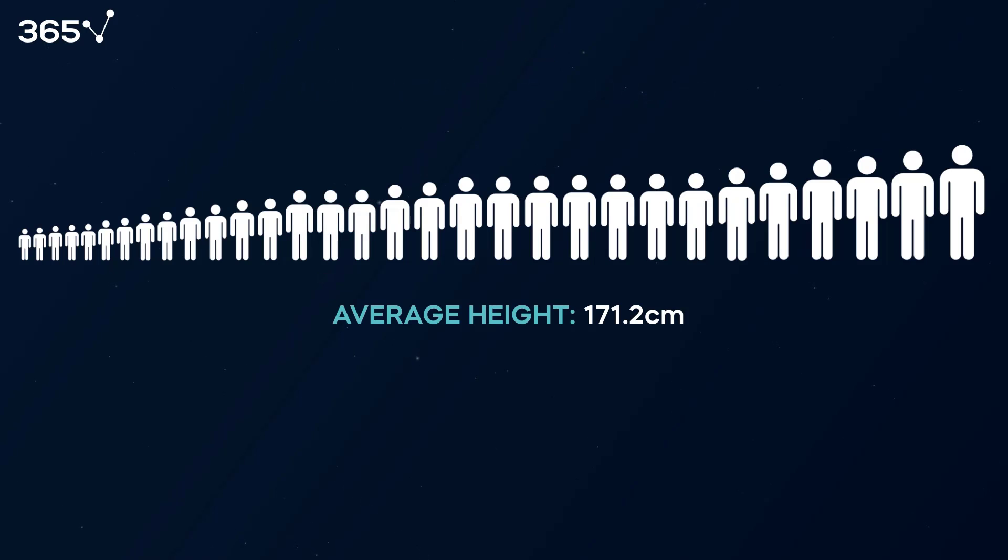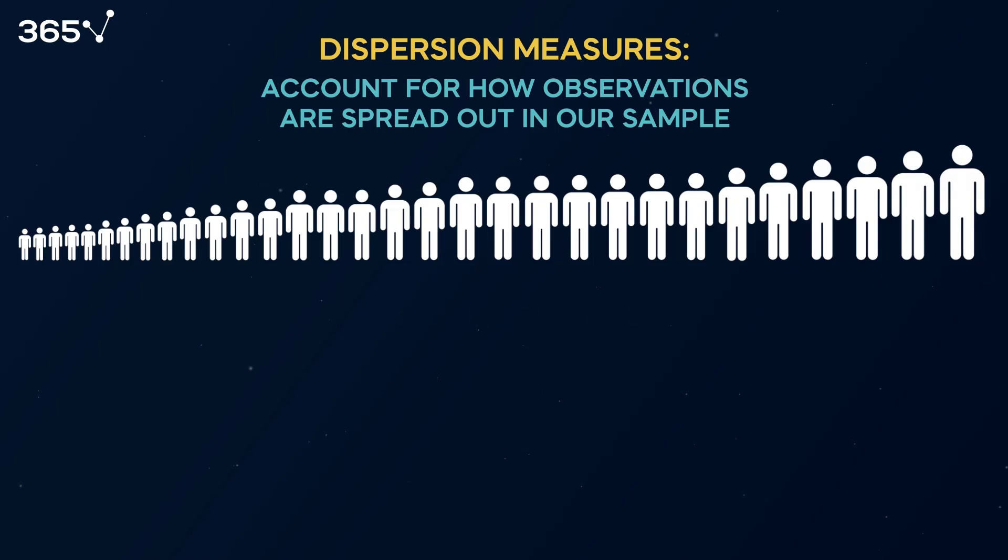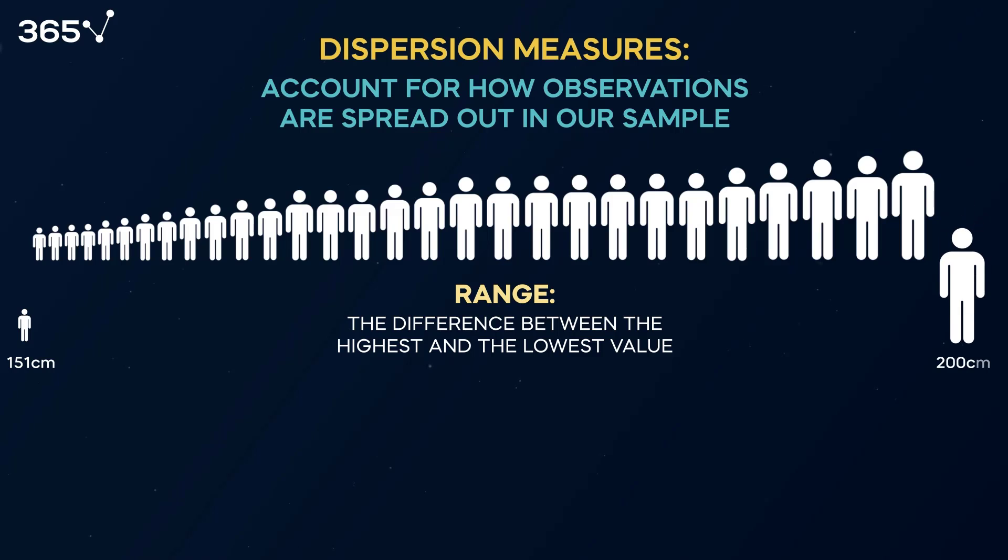The average height is 171.2, but we also have students who are 191 and even 200 centimeters tall. We need to introduce dispersion measures to account for how observations spread out in our sample. The range is an intuitive metric that measures the difference between the highest and the lowest value. So, in our case, the range is given by subtracting the shortest individual's height from the tallest individual's height, 200 minus 151. The range of this sample, then, is 49 centimeters.